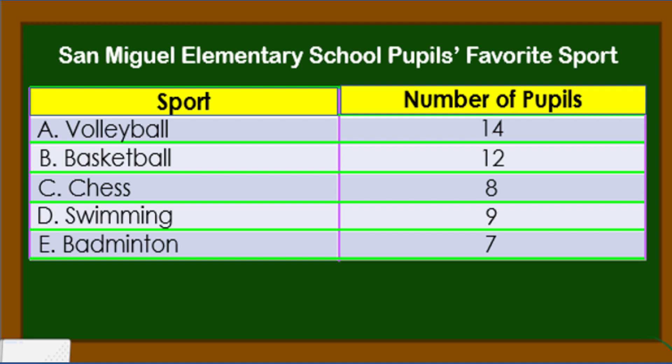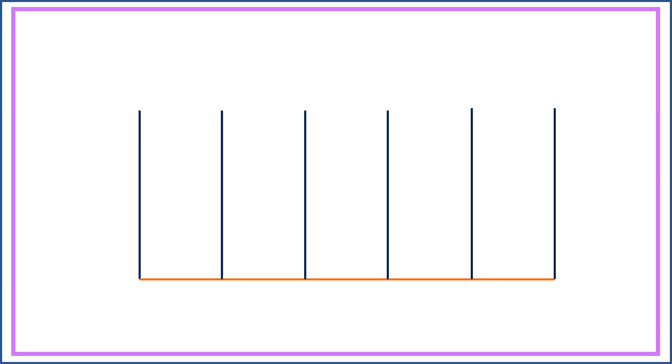The horizontal axis represents the number of students. In the table, the highest is 14. So we can make a scaling by twos starting from zero to 14. Then, we can draw eight horizontal lines.